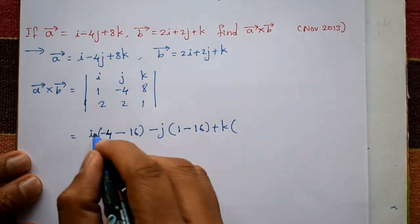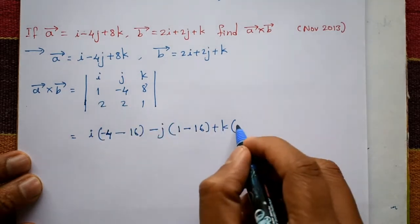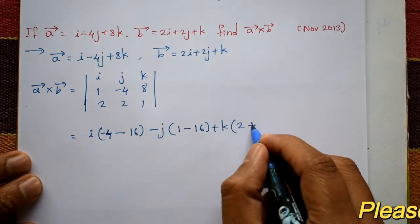Plus k, plus minus plus, okay. Plus next is 2, minus sign, 2 into minus 4 is minus 8, and this is plus 8.